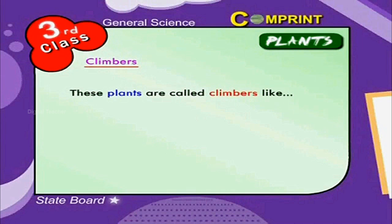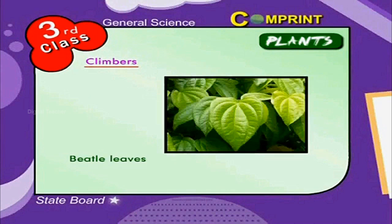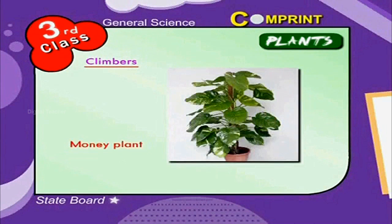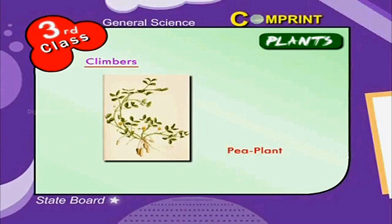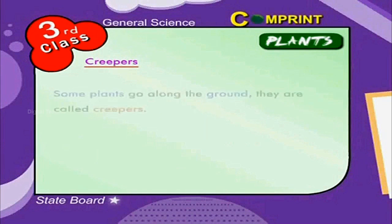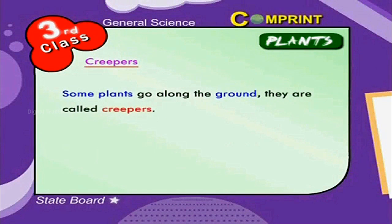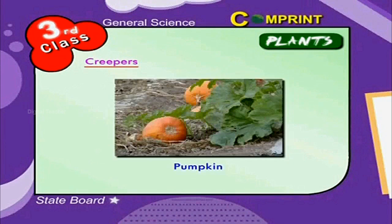Climbers — some plants have very lean stems that they can't stand erect. They need support. These plants are called climbers, like betel leaves, money plant and pea plant.